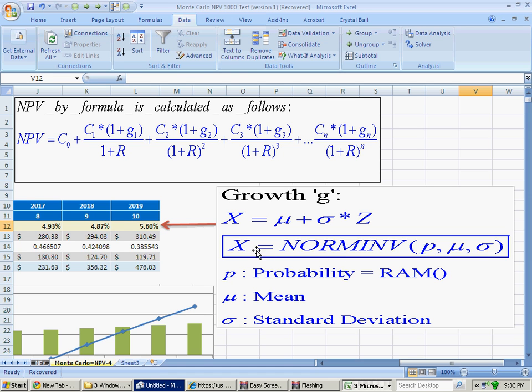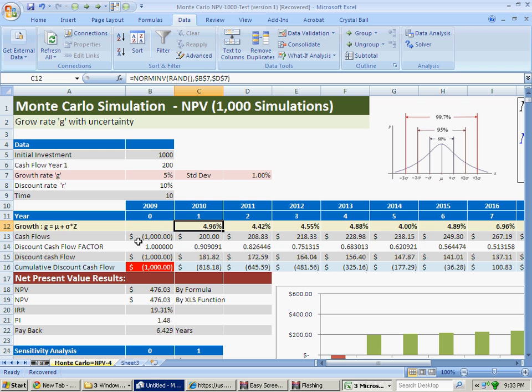which is the Excel function NORMINV. The first value is probability, which I am using the RAND function. The second value is the mean. For this particular case, it's 5%. The third value is the standard deviation of 1%. So each year, I have a different growth.